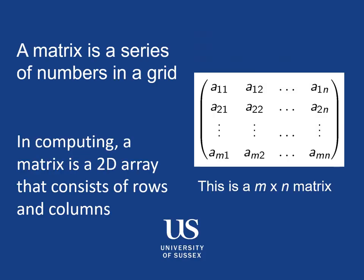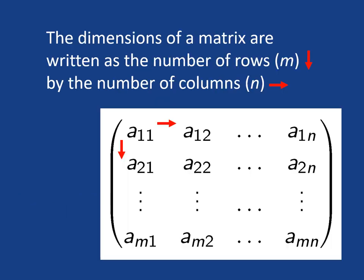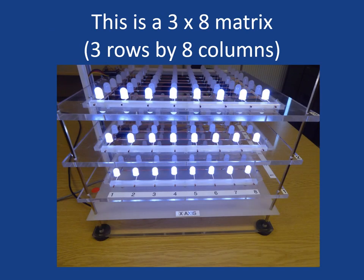Now a matrix is a series of numbers in a grid. And in computing a matrix is a 2D array that consists of rows and columns. So for example the dimensions of this matrix is written by the number of rows m by the number of columns n. And we can show this in demonstration mode very nicely. So here we've got three rows by eight columns of LEDs. So this is a three by eight matrix.